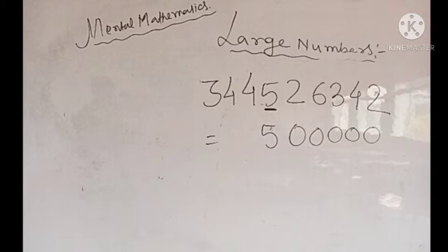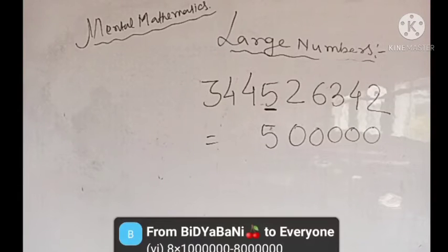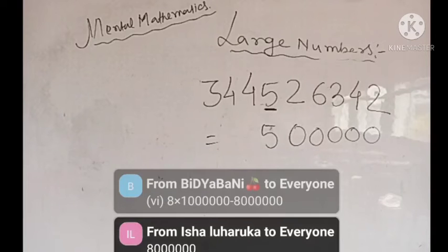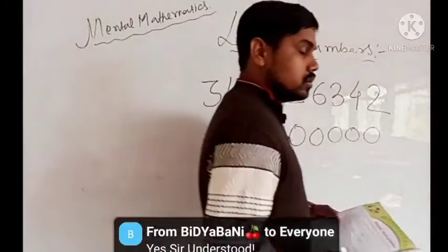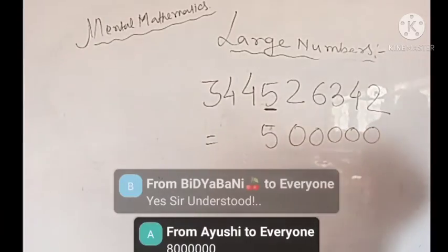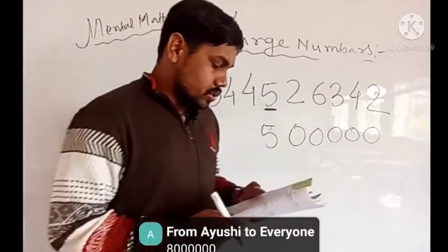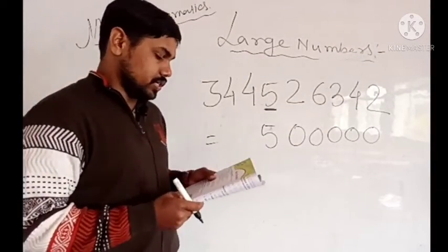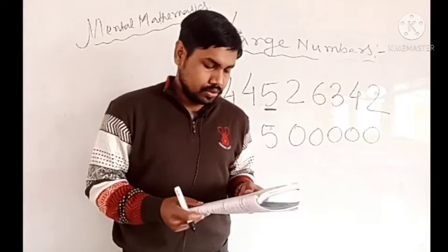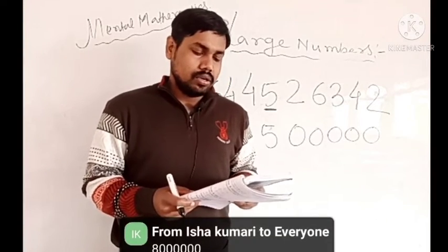Similarly, tell me the place value of 6. It is 8 and as many digits as are after 8, that many zeros — so 6 digits after it, meaning 1, 2, 3, 4, 5, 6 digits, so 8 followed by 6 zeros. So the place value of 6 is 8,000,000.